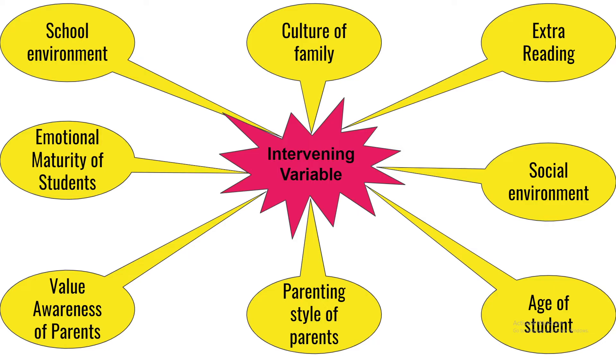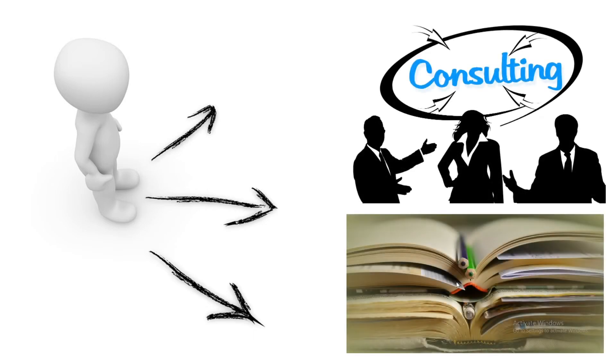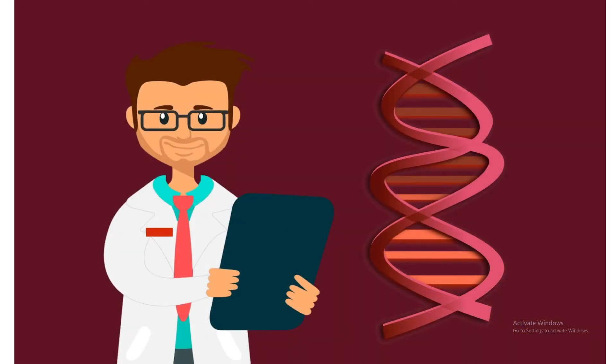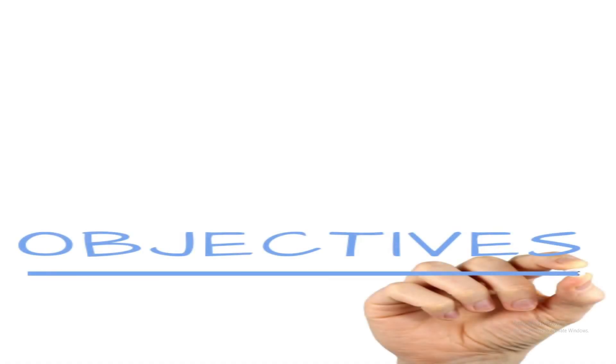There may be more intervening variables for this particular example. The researcher has to make decisions about such variables by consulting experts, referencing and reviewing the theoretical literature, and from earlier related research. Actually, the variables of the study are decided by determining the objectives of the study and formulating the hypothesis of the study.